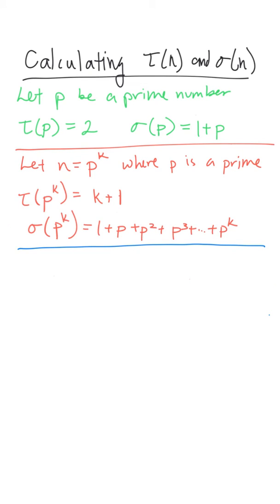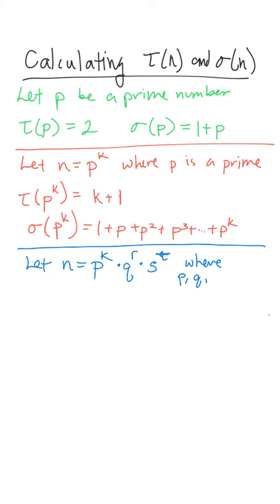Finally, we need to look at a third case where the number is not a prime and not a single prime to a power — it's some composite number. I'm going to write it in terms of its prime factorization: p to some power, where p is a prime; q is some different prime to some different power; maybe there's another prime s to some other power. So p, q, and r are different primes.